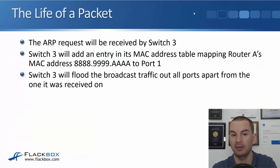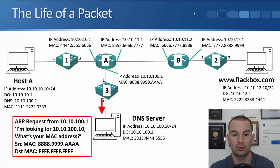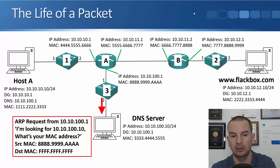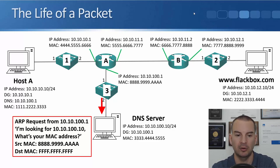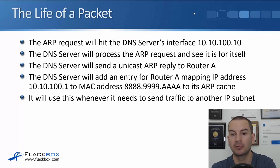The ARP request is received by Switch3, which adds an entry mapping Router A's MAC address 8.9.a to port 1, then floods the broadcast out all other ports including port 2 toward the DNS server. The ARP request is from 10.10.100.1 looking for 10.10.100.10, source MAC 8.9.a, destination MAC f.f.f. It hits the DNS server's interface at 10.10.100.10. The DNS server processes the ARP request, sees it is for itself, and sends a unicast ARP reply back to Router A.